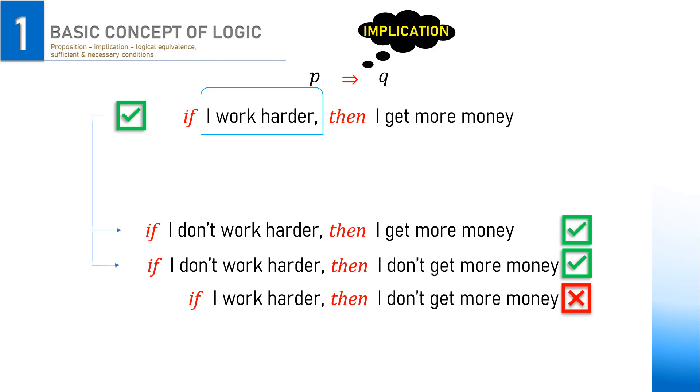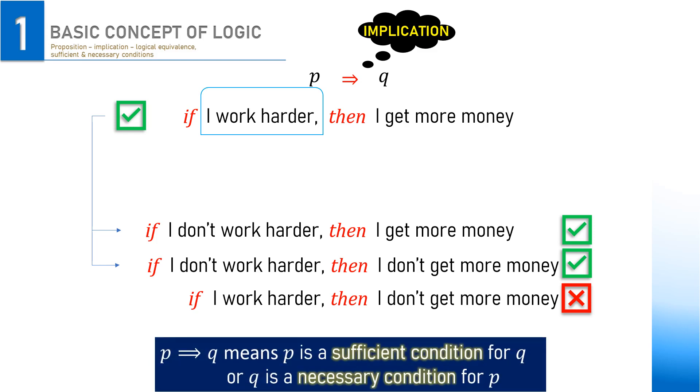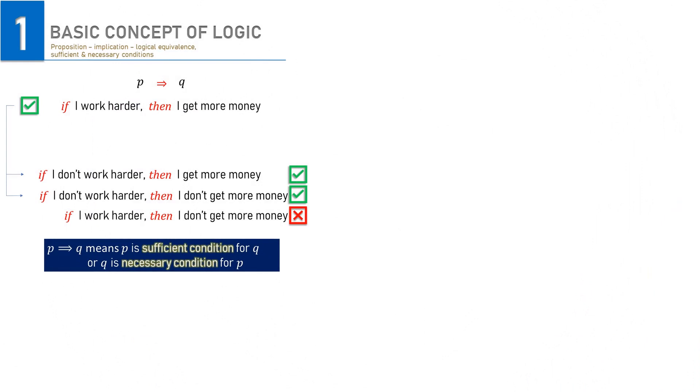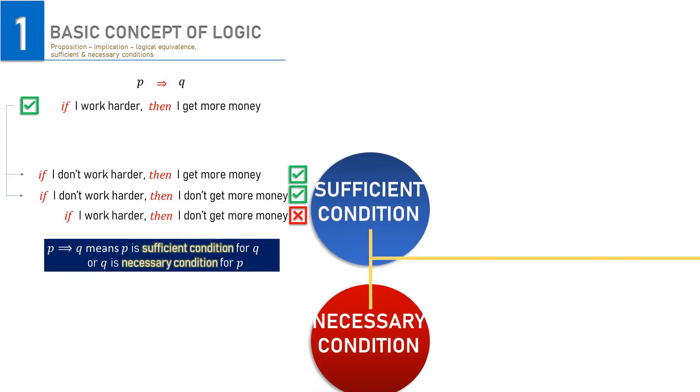Now, with the correct implications of P to Q, we can also say that P implies Q means P is a sufficient condition for Q or Q is a necessary condition for P.